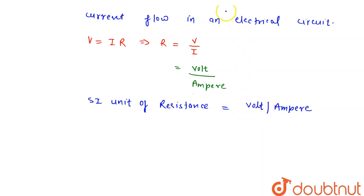And this volt per ampere is written as or termed as ohm. And the sign of ohm is this.